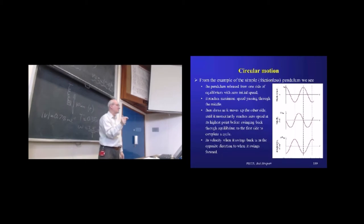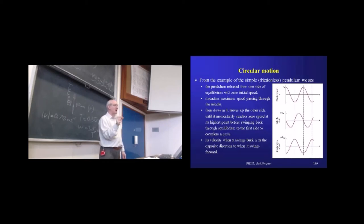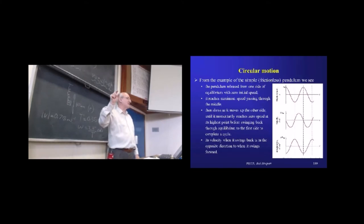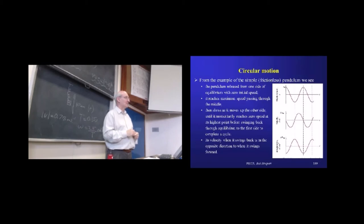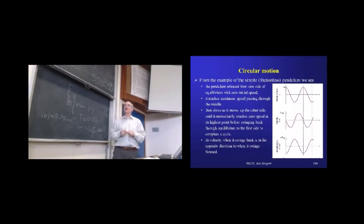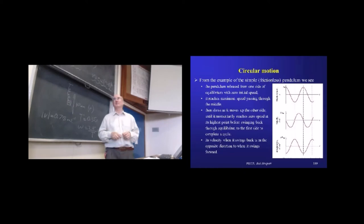So it's swinging down towards the middle where it's being accelerated all the time because basically it's falling under gravity. So it's going to have maximum velocity at the bottom, but then it's going to start decelerating again as it goes around the outside. So momentarily the magnitude of our velocity at either end of this swing will be zero, and the maximum will be in the middle — at the equilibrium position.